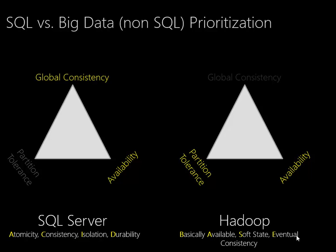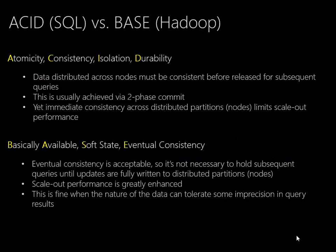BASE means basically available — not every partition is always going to be there, but eventually there will be consistency. In the ACID idea, we can have distributed databases across a lot of nodes, but they have to be consistent before subsequent queries can be released, and we'll very often have two-phase commit for this. So we get immediate consistency, but we also have some latency involved — we have to wait for distributed nodes to commit their data before the entire transaction can be committed. There's a little bit of a give on scalability there. Hadoop follows the BASE concept where it's willing to forego two-phase commit and have a little bit less consistency across nodes; in exchange, it gets even more availability and even more scalability.